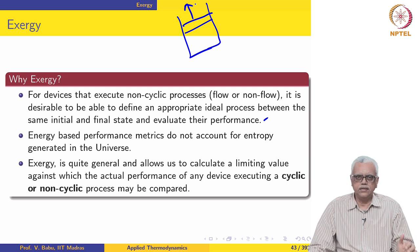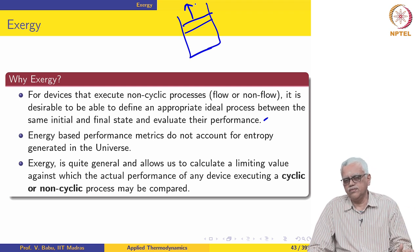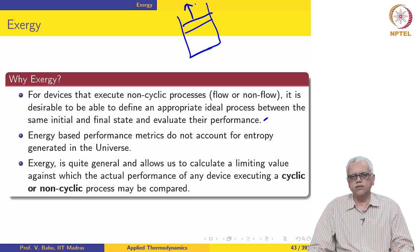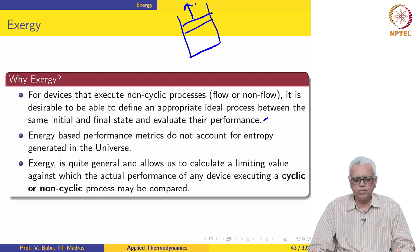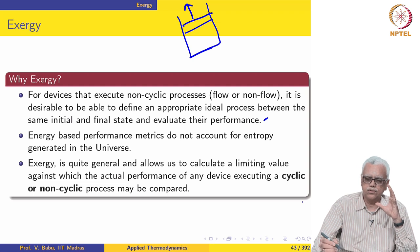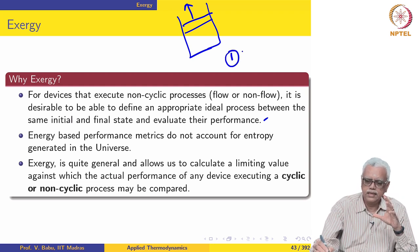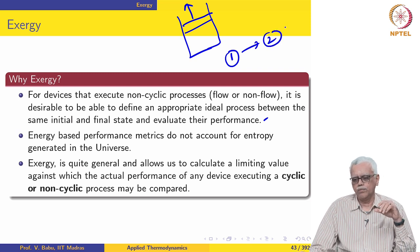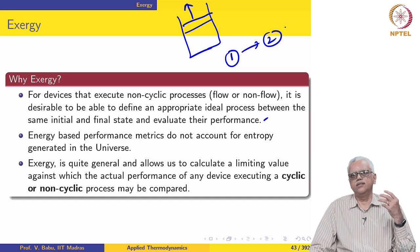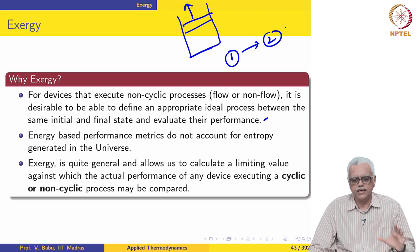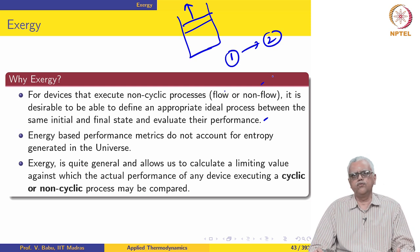You may recall from the previous course that we have not actually defined efficiencies for individual processes. We have defined efficiency for a cycle, COP for a reverse cycle, but not efficiencies for individual processes except isentropic efficiency. So basically what we would like to do is: a system starts from a given state 1 and goes to a final state 2, and we would like to find out what the ideal process between these two states would be. The work developed during that ideal process would then form the basis of defining an efficiency for non-cyclic processes, whether flow or non-flow.